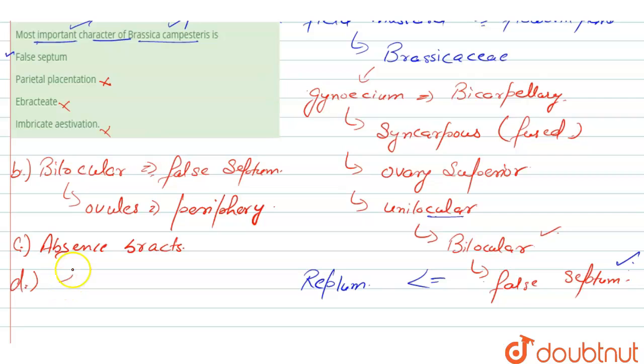After that, imbricate aestivation. This option is also incorrect. Imbricate aestivation means that there are five petals, and out of these five petals, one petal is internal and the second petal here is external, and the rest of all are randomly arranged.